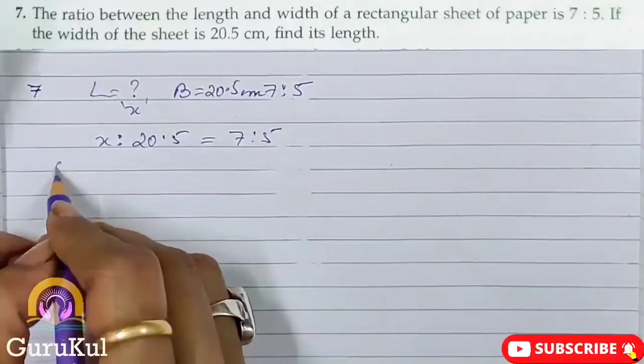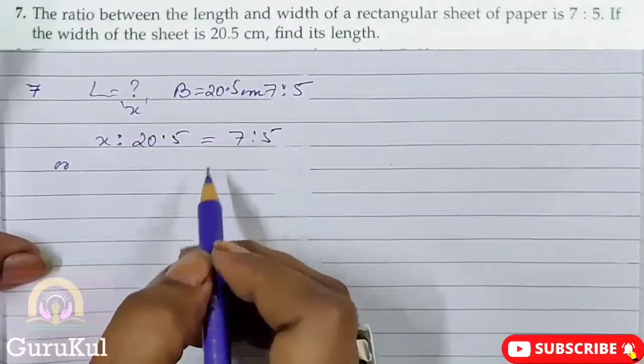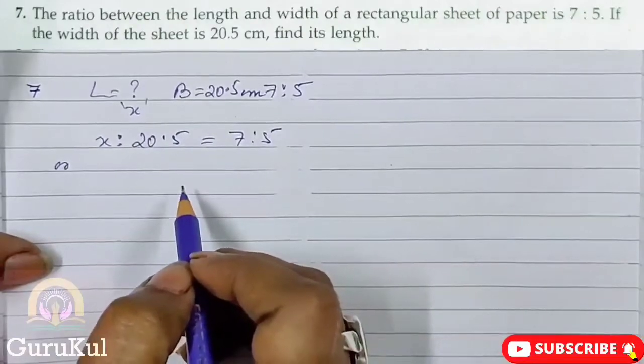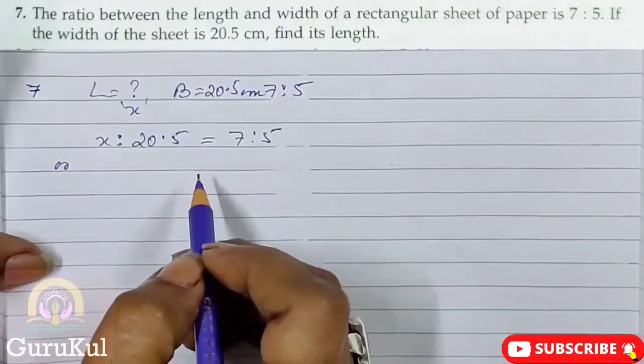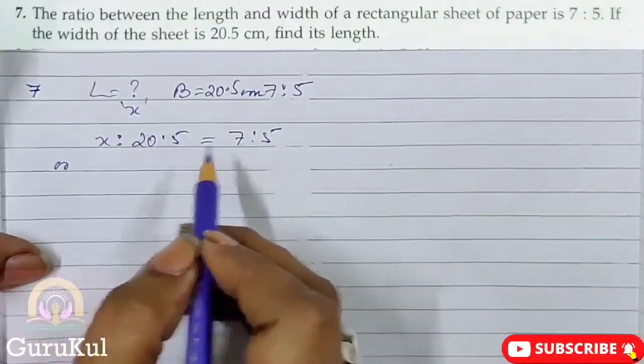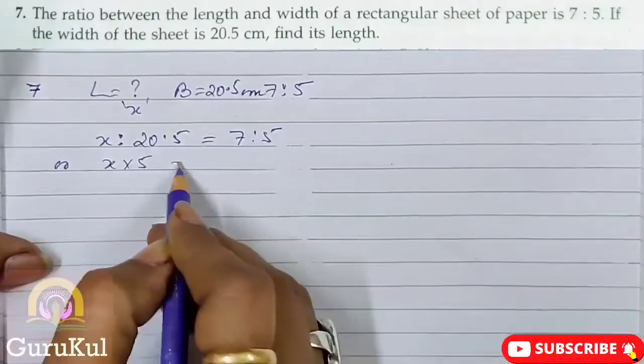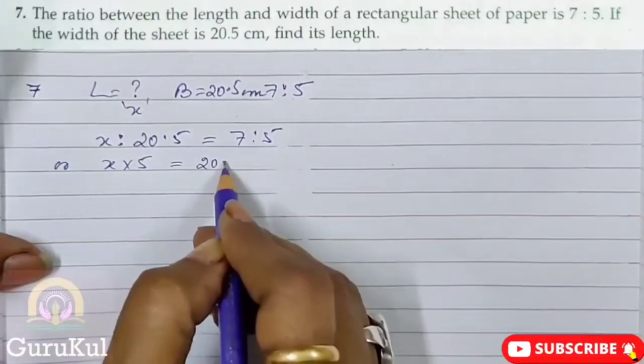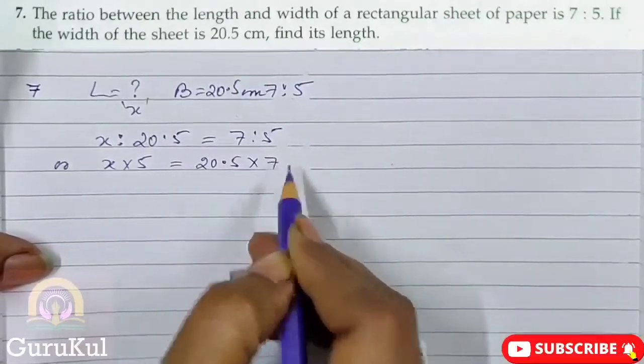Now what will be our next step? Product of extremes is equal to product of means. So product of extremes is X into 5 is equal to 20.5 into 7.